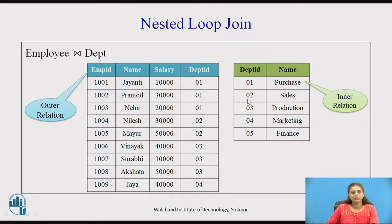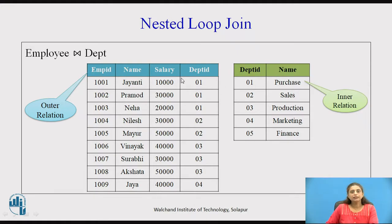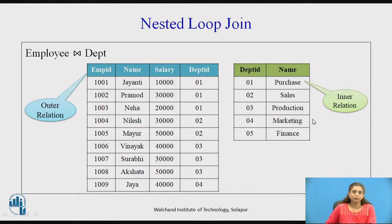Then the first record is compared with the second, third, fourth, and fifth records — all five records are compared with the first tuple. Once the complete relation scan is finished, the second tuple is brought to main memory and again compared with all records of department. In this way, every tuple is compared with the complete department relation — this is how nested loop join works.